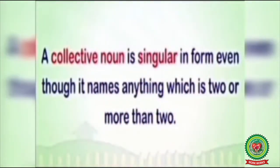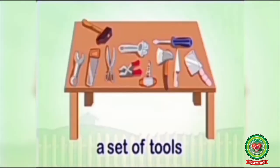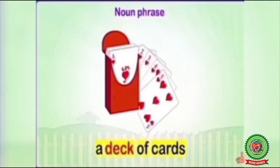A Collective Noun is singular in form even though it names anything which is two or more than two. Means your Collective Noun is always singular. For example, a set of tools — though tools means more than one, your Collective Noun set is singular. A deck of cards — deck means a group of cards, and even though cards means more than one, your Collective Noun deck is singular.